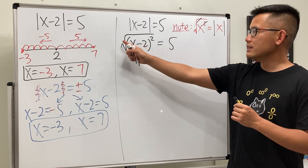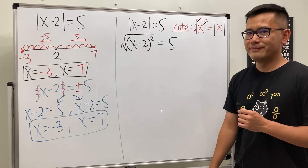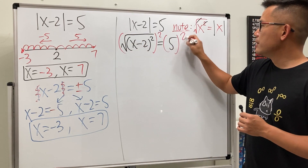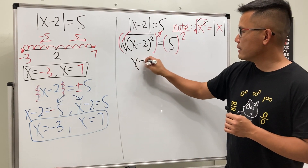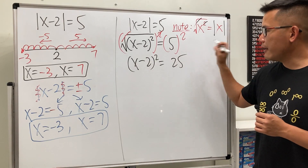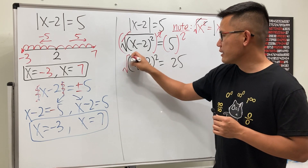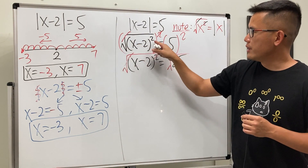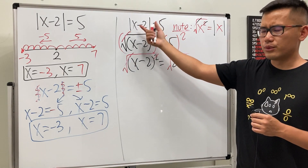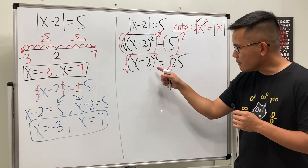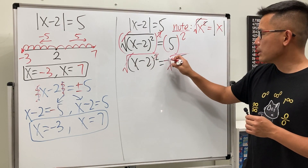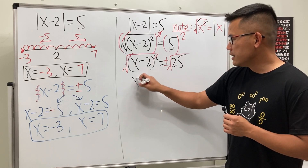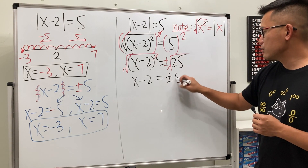We have √((x-2)²) = 5. To solve, we square both sides — the square and square root cancel — giving (x-2)² = 25. Next, to remove the square, we take the square root of both sides. We didn't cancel earlier because that would just bring back the absolute value. Taking the square root of both sides, we put a plus or minus on the right: x minus 2 equals plus or minus √25, which is 5.